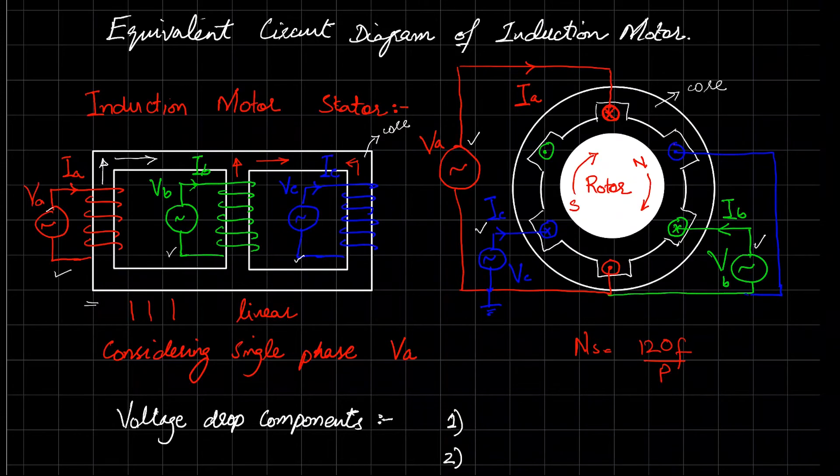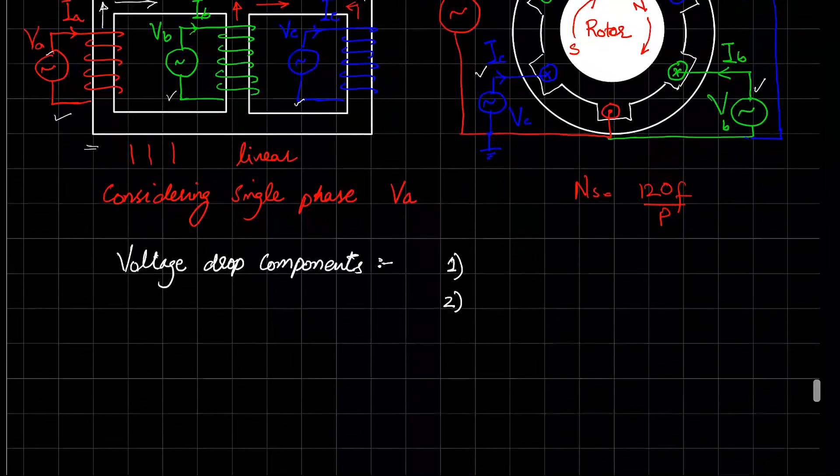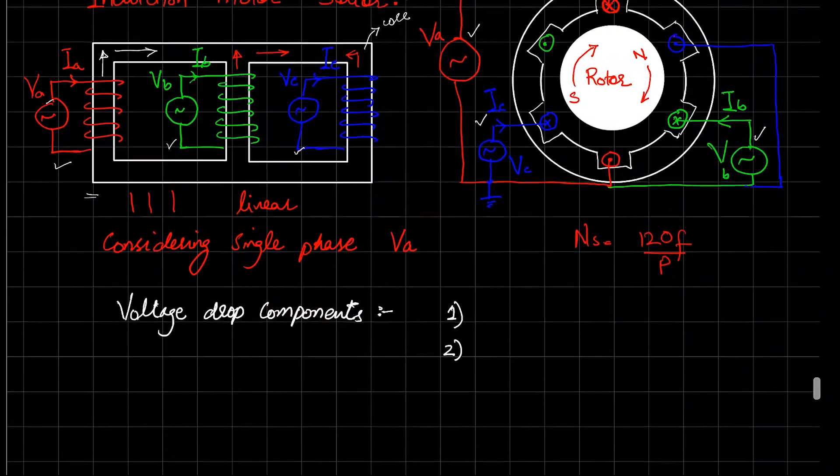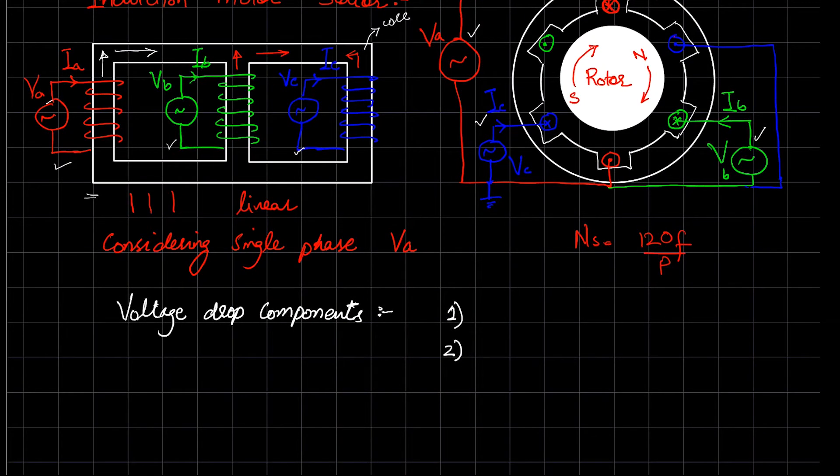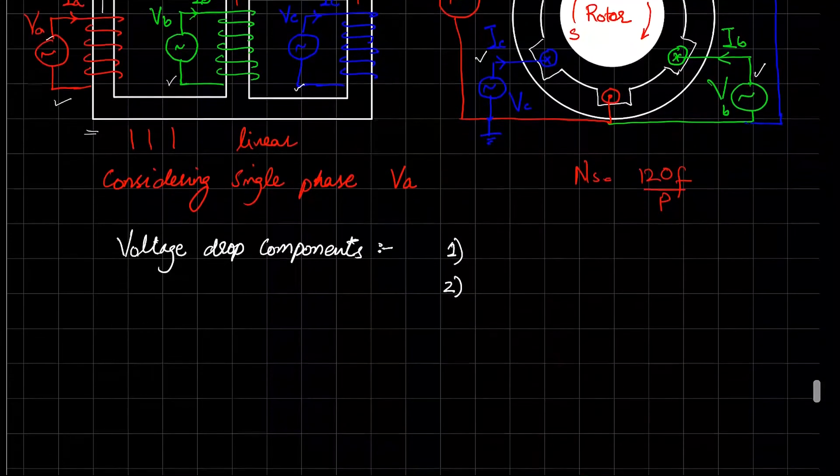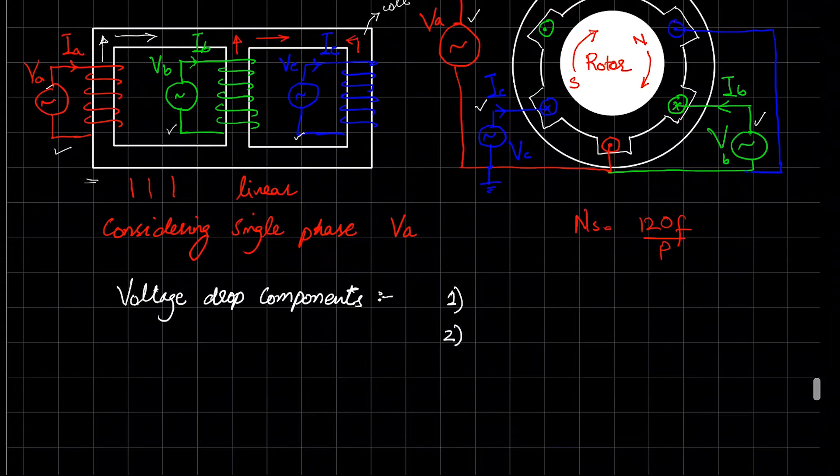The purpose of explaining all this is that the transformer and stator will have the same equivalent diagram. Whenever we convert any magnetic quantity to electrical quantity, we work with only a single phase diagram.